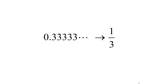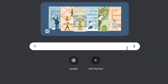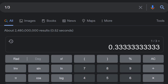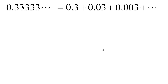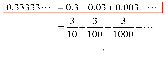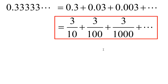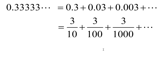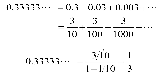We have 0.333... This is the repeating decimal when you type 1/3 in the calculator. The repeating decimal can be rewritten as the sum of a geometric series: 0.3 + 0.03 + 0.003 + ... or 3/10 + 3/100 + 3/1000 + ... Using the first term 3/10 and ratio 1/10, the formula gives (3/10) / (1 − 1/10) = 1/3, which is what you expect.